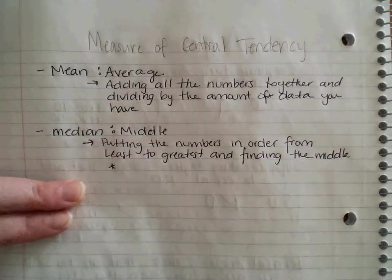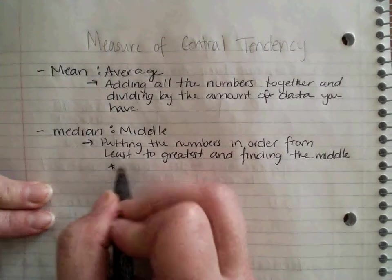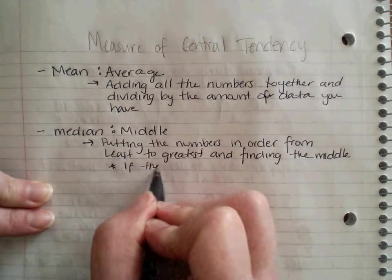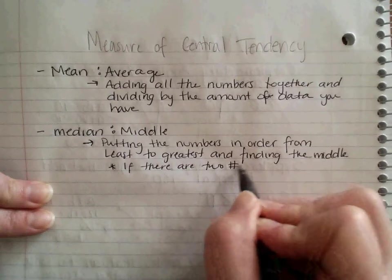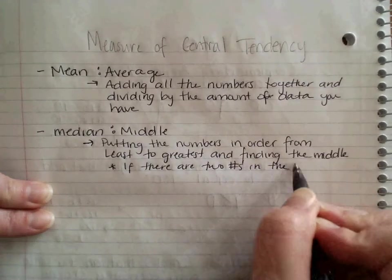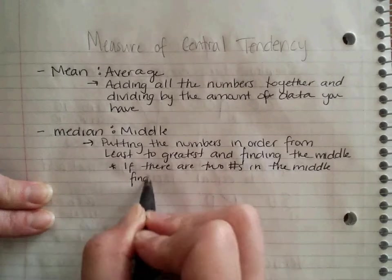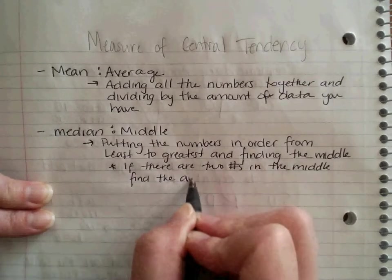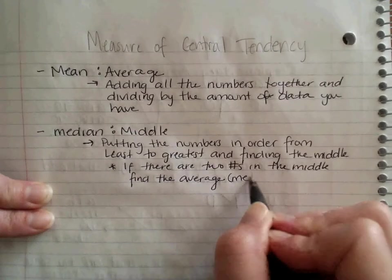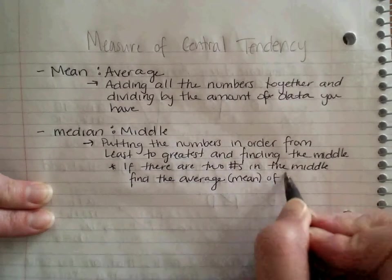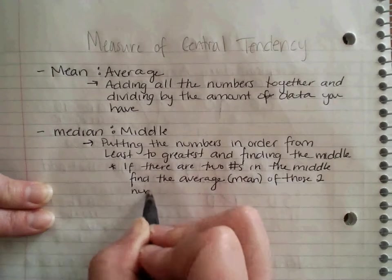Kind of an information there is sometimes you're going to have two numbers in the middle. So if there are two numbers in the middle, find the average, which is the mean, of those two numbers.